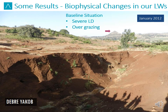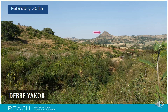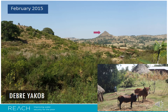Here are some results from our learning watershed. This is one of our learning watersheds called Devriaco. The baseline situation shows serious land degradation mainly caused by overgrazing and poor management — this was supposed to be the communal grazing land. After four years, the same area is converted into such productive lands after we apply the right technologies, and communities adopt zero grazing through a cut-and-carry system.